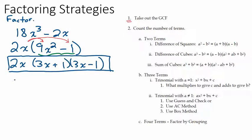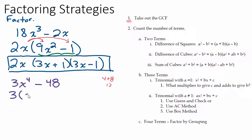Let's try 3x to the fourth minus 48. You can pause the video and try it, then start the video and see what happened — that's always a good strategy. Step number one: does it have a greatest common factor? I've got two terms, and I need to see if 3 goes into 48. A trick: add the digits of the number — 4 plus 8 is 12, and since 3 goes into 12, 3 will go into 48. So 48 divided by 3 is 16, giving us 3 times the quantity x to the fourth minus 16.